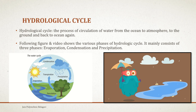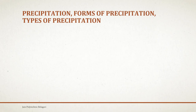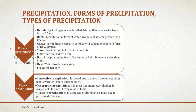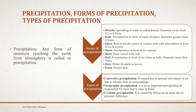A video has been shown here to help you understand the hydrological cycle. Now, precipitation, forms of precipitation, and types of precipitation: precipitation is any form of moisture reaching the earth from the atmosphere. It might be water droplets, showers, or even some type of solid particles like stones.